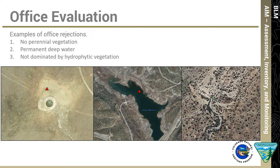Below are examples of office rejects, including a small artificial pond with no perennial vegetation along the margins, a sample location that fell within a deep water lake, and a gully with no hydrophytic vegetation.